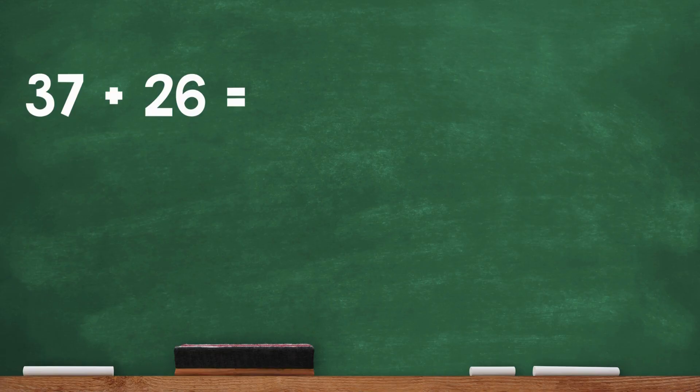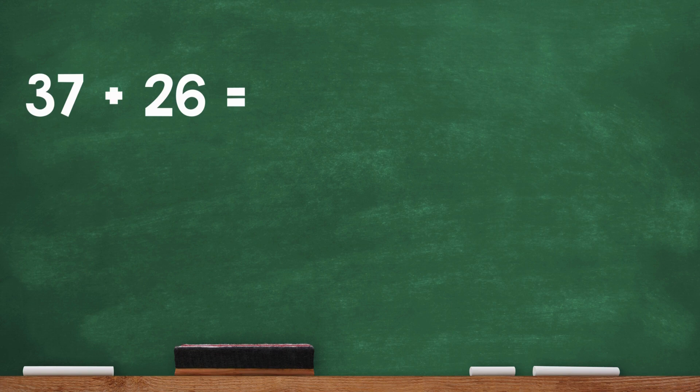Here's our problem: 37 plus 26. We're going to use base 10 drawings to help us solve it. Let's break it down into tens and ones. First, let's draw 37. That's 3 tens and 7 ones.